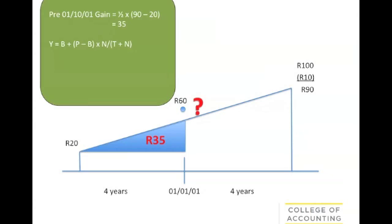There's our time apportioned base cost formula. And the problem that we're going to have is that the agent's commission is a cost but B is only expenditure incurred before October 2001. That means that B excludes selling expenses because those are obviously incurred right at the point that we dispose of the asset. So how are we going to take those into account? Because if we'd sold it on the 1st of October 2001, we still would have incurred some selling expenses.